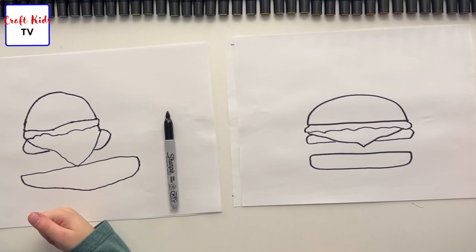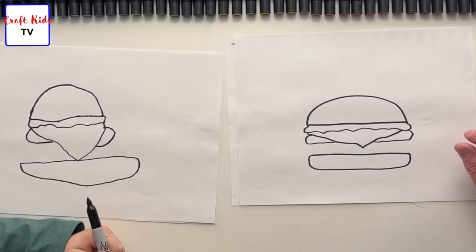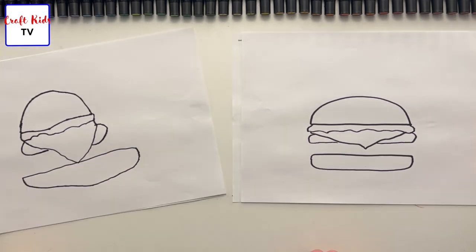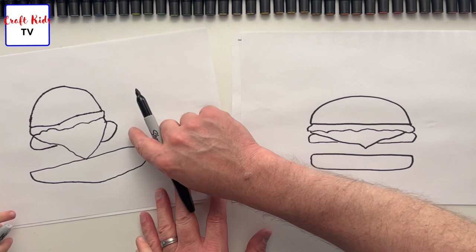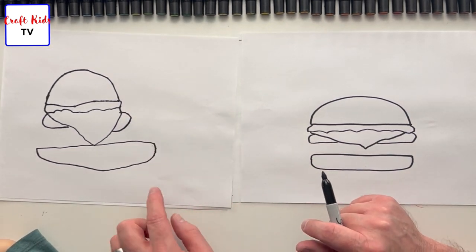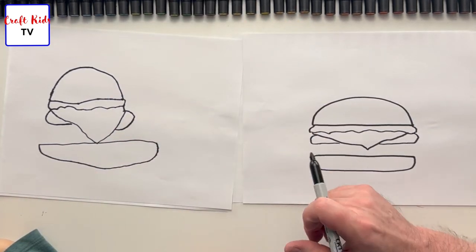We're going to draw another burger patty. We have to draw some more right there. It's a burger like Dad cooks for you sometimes - the burger's just inside all of this stuff.